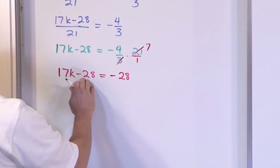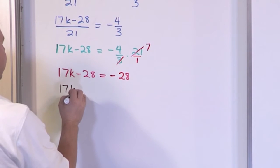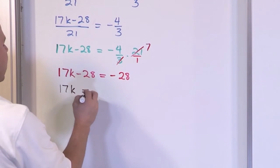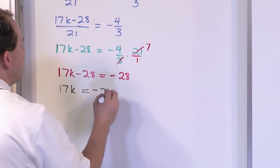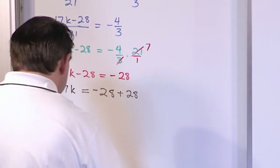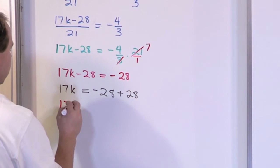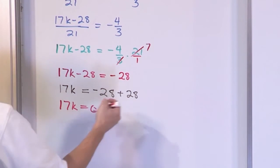So now we want to get rid of this 28, working ourselves closer. So we're going to add 28 to both sides. It's going to disappear there. We're going to have negative 28 plus 28. And finally, this is going to give you zero. Negative 28 plus 28 is zero.